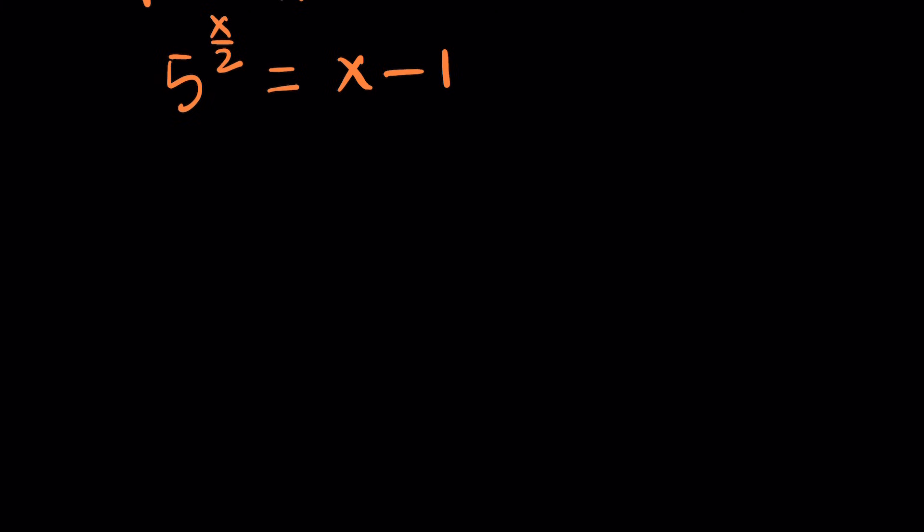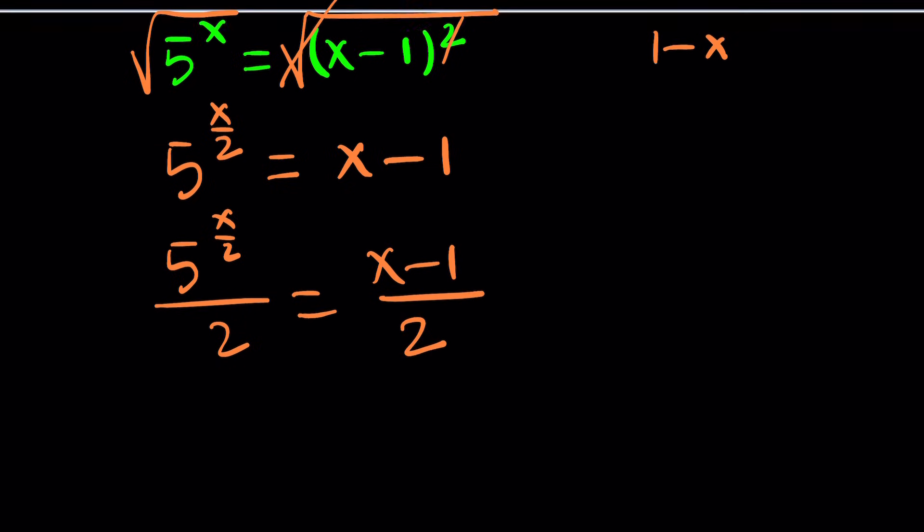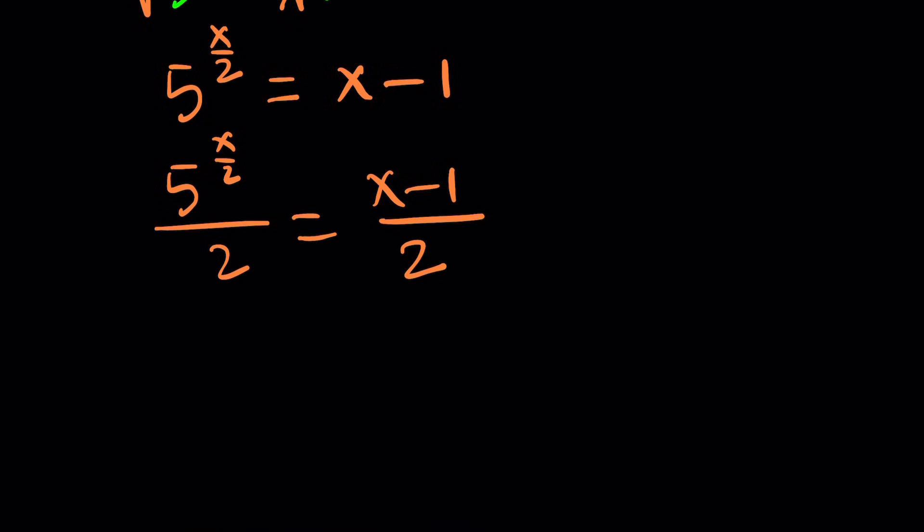Watch out because this is going to be really cool. Next step, I'm going to divide both sides by 2. And I'm doing it because my goal is to get to Lambert, which is this. I want to get something like t e to the t, even though we don't have that in the equation.